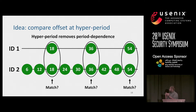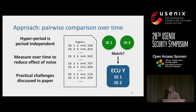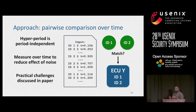Our solution is to figure out which messages help us remove that period dependence. Our insight is to choose messages at the hyperperiod — the least common multiple of the periods for two different IDs. For two IDs that transmit at periods 18 and 6, we pick the least common multiples. By tracking the offset using these particular messages, if the offset remains constant, we know that these two IDs originated from the same ECU. We measure over time to reduce the effect of noise, then cluster based on these matches to group IDs into sets of ECUs.